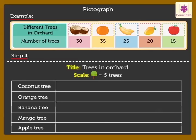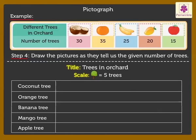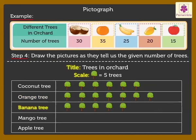Lastly, Step 4: Draw the pictures as they tell us the given number of trees. So, draw 6 trees for coconut trees, 7 for orange trees, 5 for banana trees, 4 for mango trees, and lastly, 3 for apple trees.